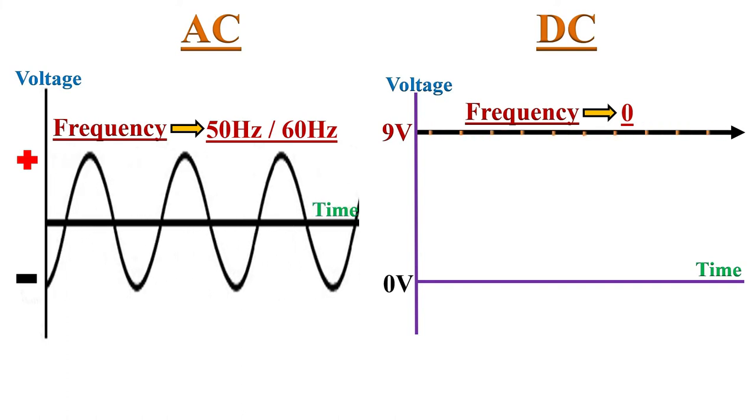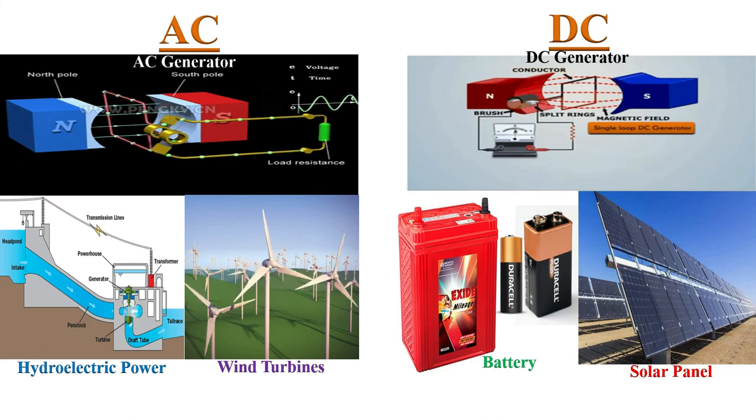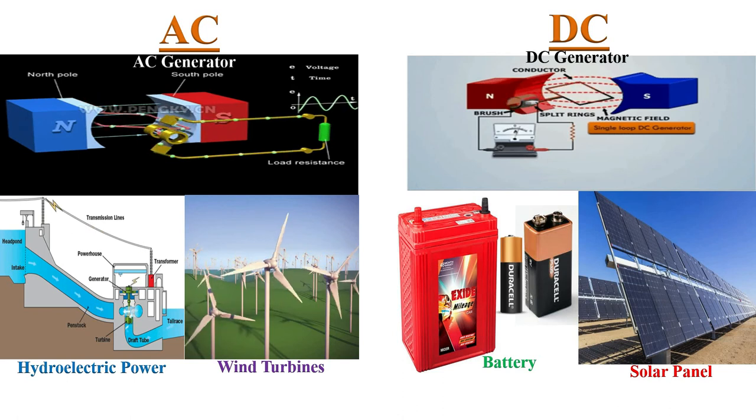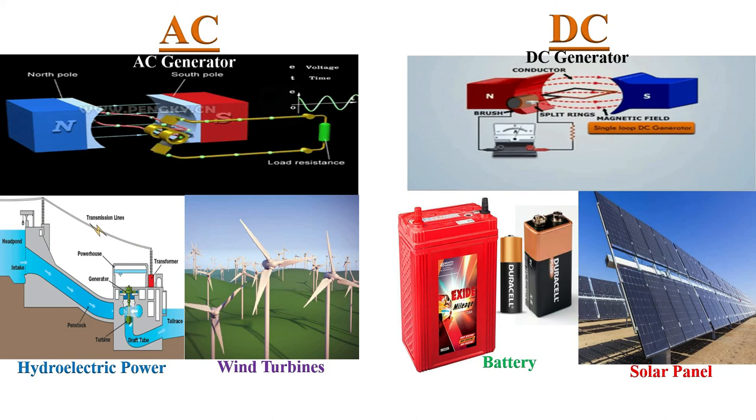Alternating current produced by alternator, hydroelectric power and wind turbines. Direct current generated by DC generator, batteries and solar panel.